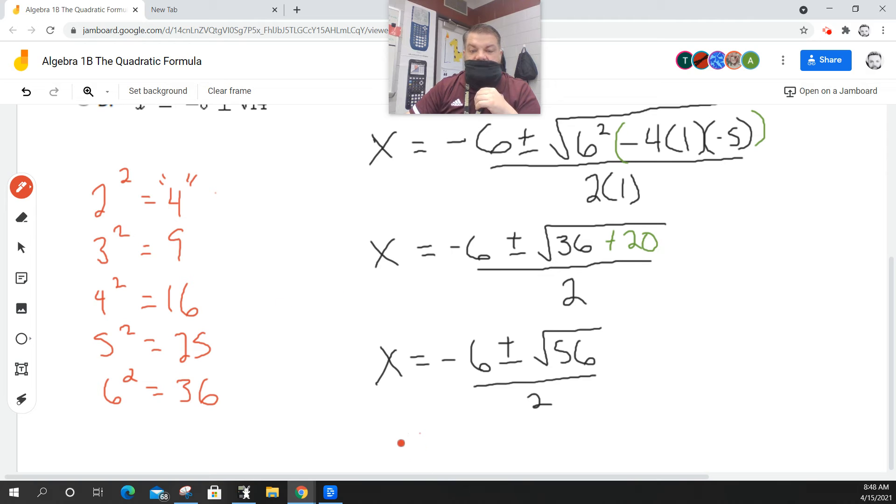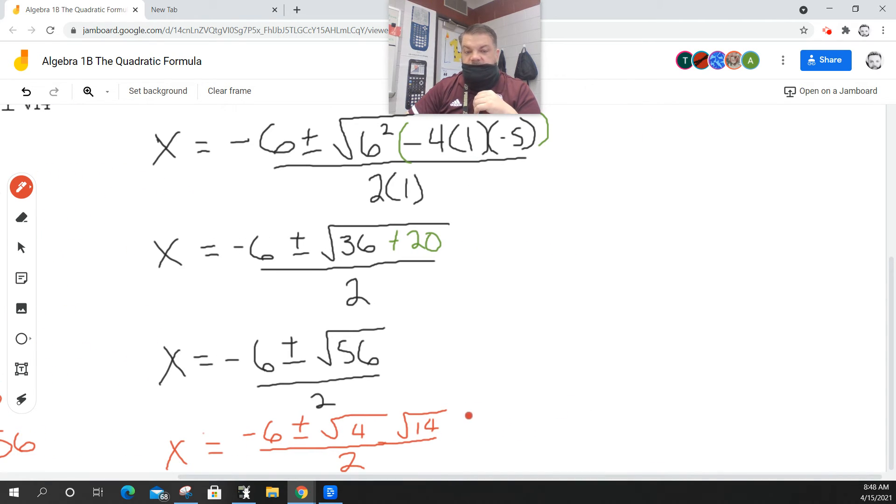Well, that means that I can rewrite this as x equals negative six plus or minus. So, four times 14 equals 56. So, I can take this and say the square root of four times the square root of 14 all over two. Now, I'm going to have to slide over here a little bit. And say x is equal to negative six plus or minus two times the square root of 14 all over two.